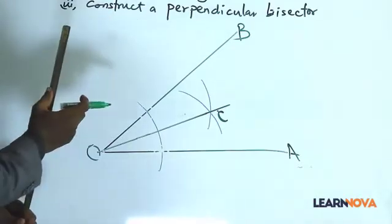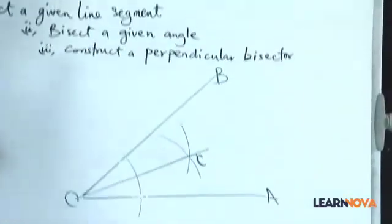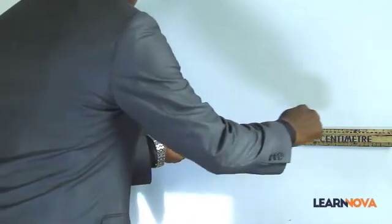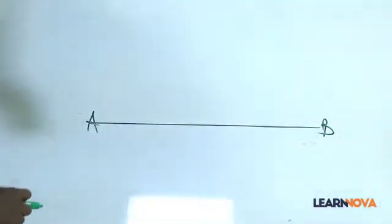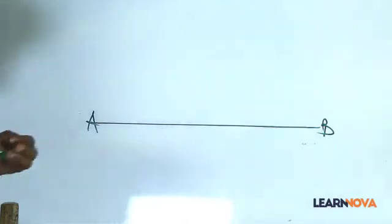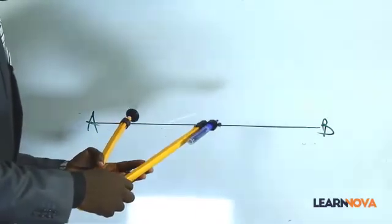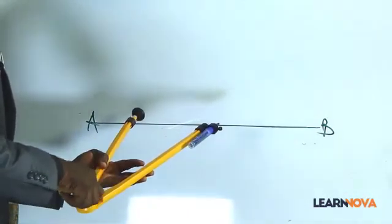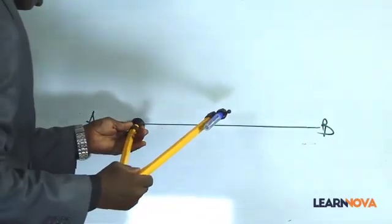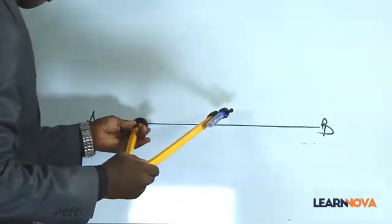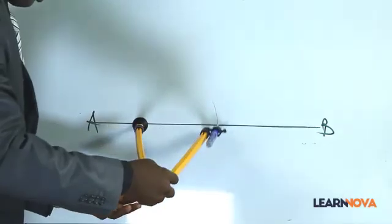Now, having done that, let us see. How do you construct a perpendicular bisector? We'll do that right away. Let us call this line A, B. And then you grab your compass. Take any radius that is convenient for you. I want to place this compass here. I want to take a convenient radius.